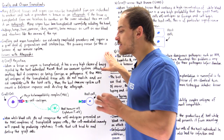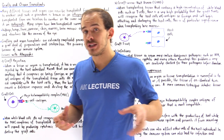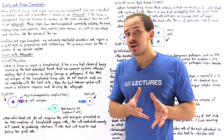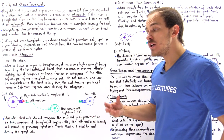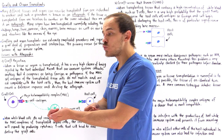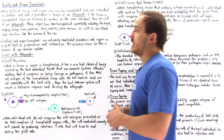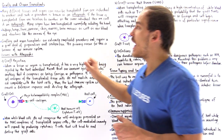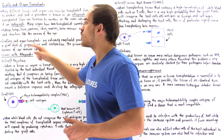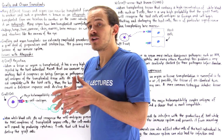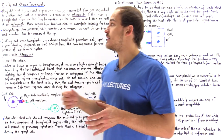When we transfer an organ or tissue from one individual to a different individual, that organ or tissue is known as an allograft. If we remove tissue from one individual and move it to a different location on that same individual, we call it an autograft. Auto means the same individual; allo means two different individuals.